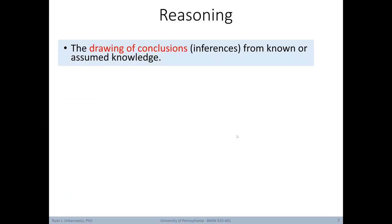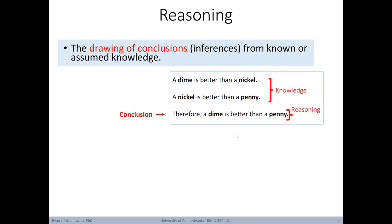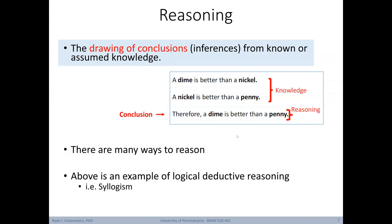So what is reasoning? It's the drawing of conclusions or inferences from known or assumed knowledge. For example, given two pieces of knowledge — a dime is better than a nickel, and a nickel is better than a penny — we can draw the conclusion that therefore a dime is better than a penny. We've connected the two original pieces of knowledge to derive a new conclusion. There are many ways to reason; the above is an example of logical, deductive reasoning, otherwise known as a syllogism.